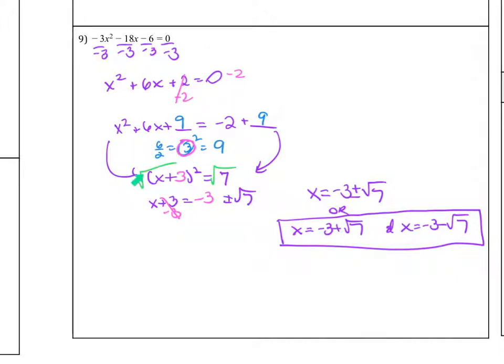Then I factored it on the left side. This is x plus 3, and then squared, equals negative 2 plus 9 is 7. So I draw the arrows just to remind me that I should be adding it. So it's not 9 that goes there. It's the number that I added to whatever was there previously.